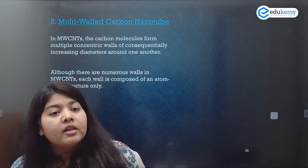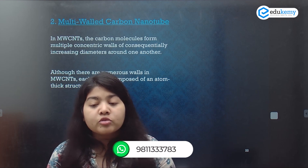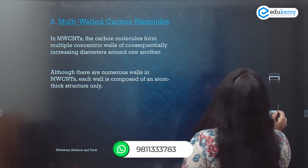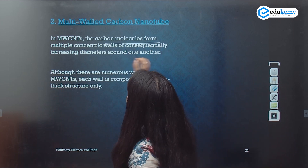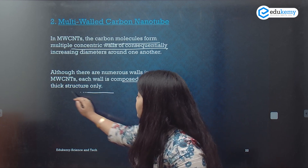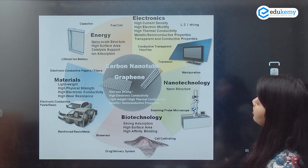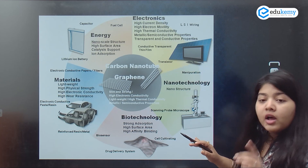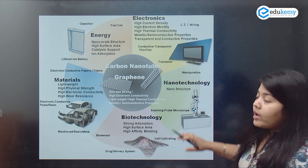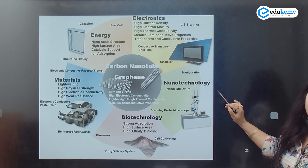Now, multi-walled carbon nanotubes: the carbon molecule forms multiple concentric walls, where each wall is composed of an atom-thick structure. Single-walled carbon nanotubes are used in medicine and cancer therapy, whereas multi-walled carbon nanotubes are used in nanostructures for energy production, electronics, microscopy, biotechnology, and biosensors.